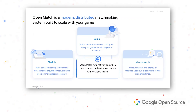OpenMatch is a modern distributed matchmaking system that allows you to scale with your game. It currently runs on GKE, our proprietary Kubernetes offering. For example, suppose you have 10 players and your game does really well — suddenly you're hit with 10 million players. The benefits of Kubernetes allows your matchmaker to scale up with that surge of players on the fly, which is one of the big things we wanted to target.